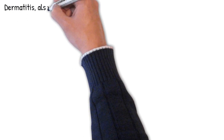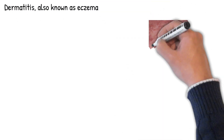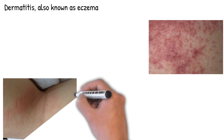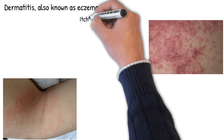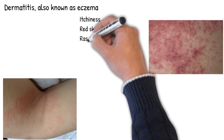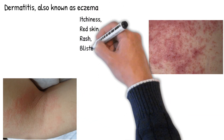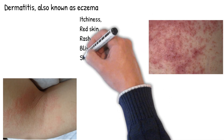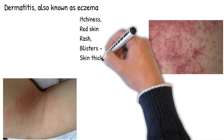Dermatitis, also known as eczema, is a group of diseases characterized by inflammation of the skin. Common symptoms are itchiness, red skin, and a rash — sometimes blisters when acute, and skin thickening when long term.